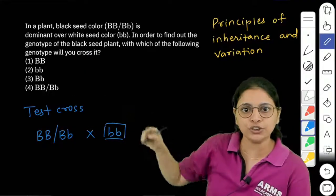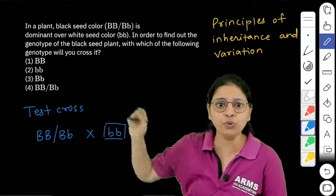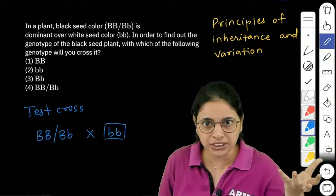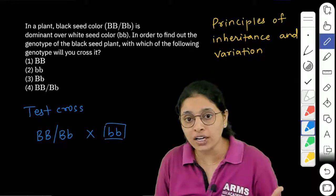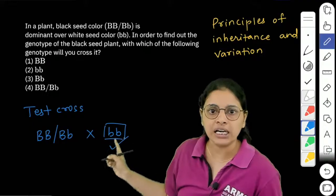Out of the given options, there is only one option - option number 2, bb. So you take the plant which produces black seeds and cross it with the plant which has bb genotype.